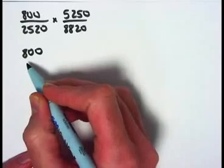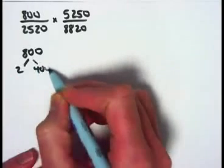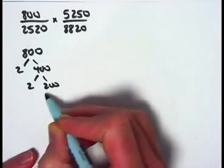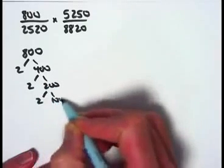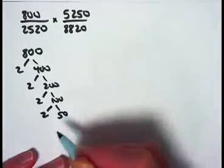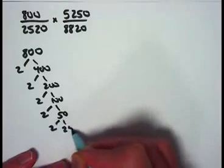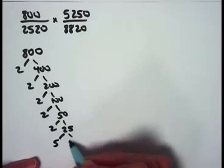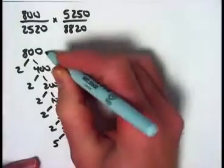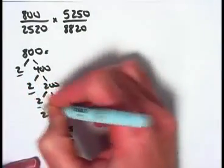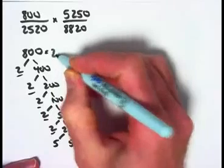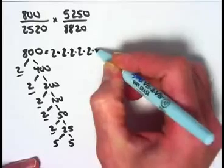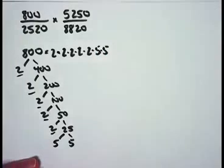Let's start with 800. What's its prime factorization? Well, it's divisible by 2: 400 is also divisible by 2, then 200 is divisible by 2, 100 is as well, 50 is as well, and 25 is not divisible by 2 — it's 5 times 5. So the prime factorization of 800 involves five 2's and two 5's. I'm using a dot for multiplication here.